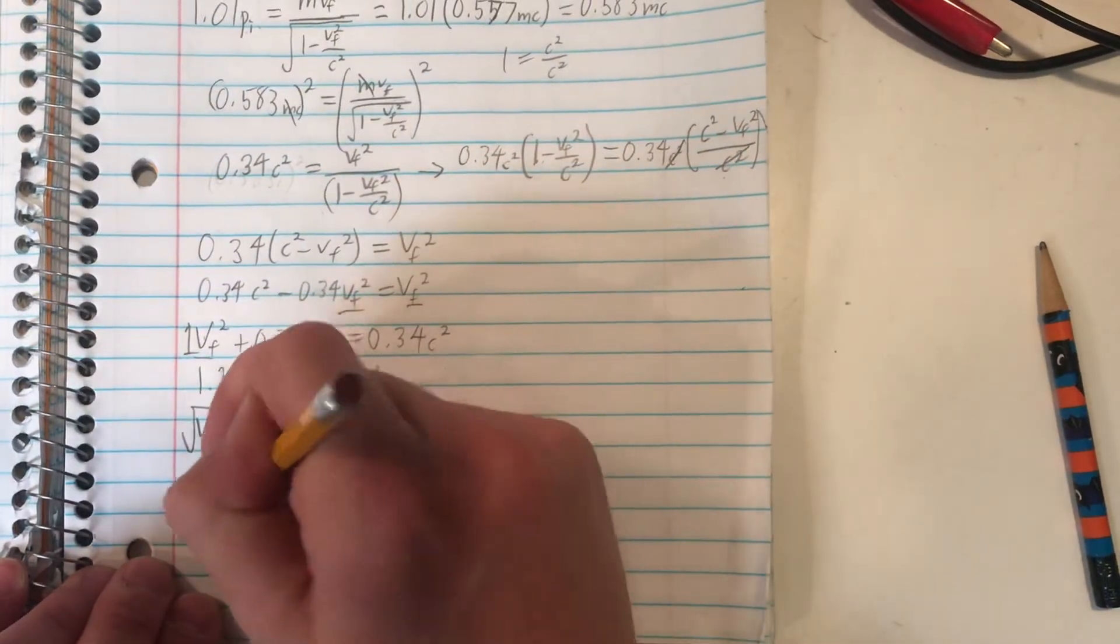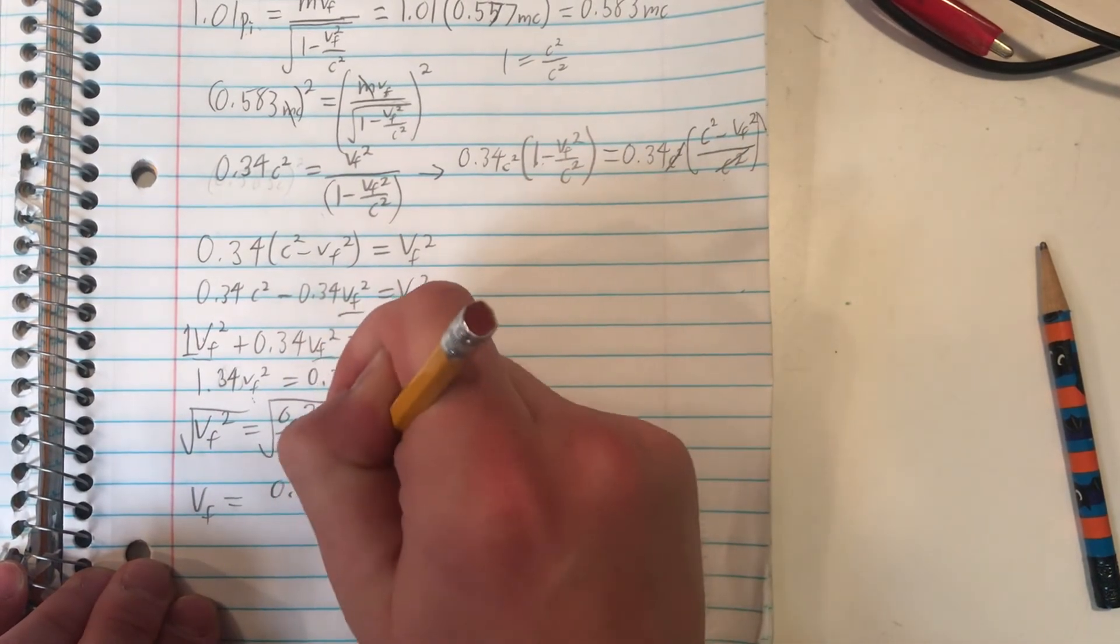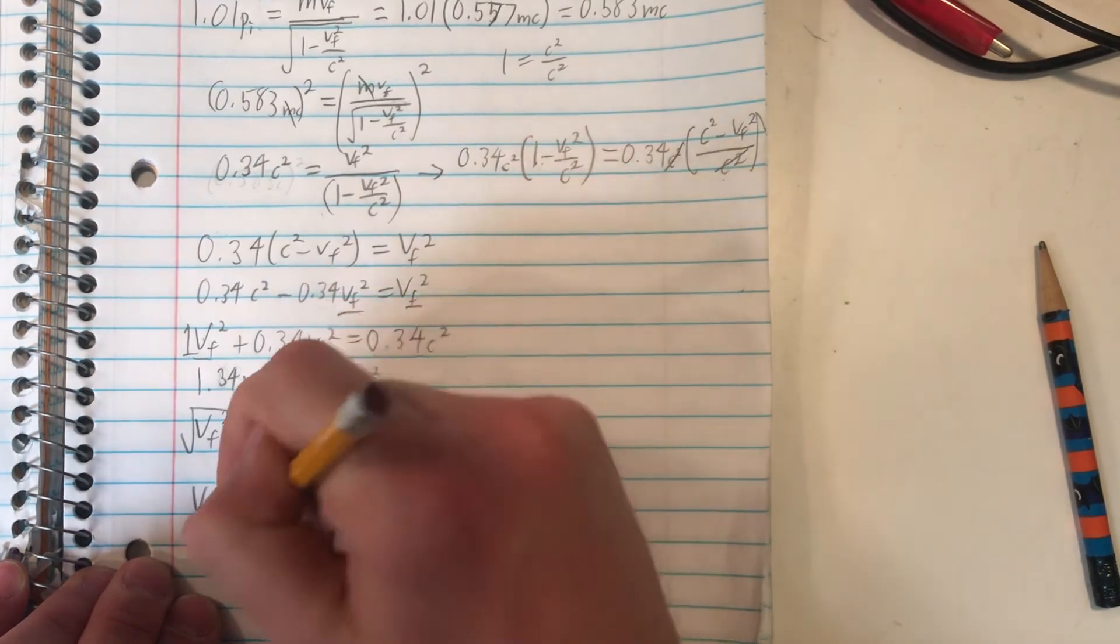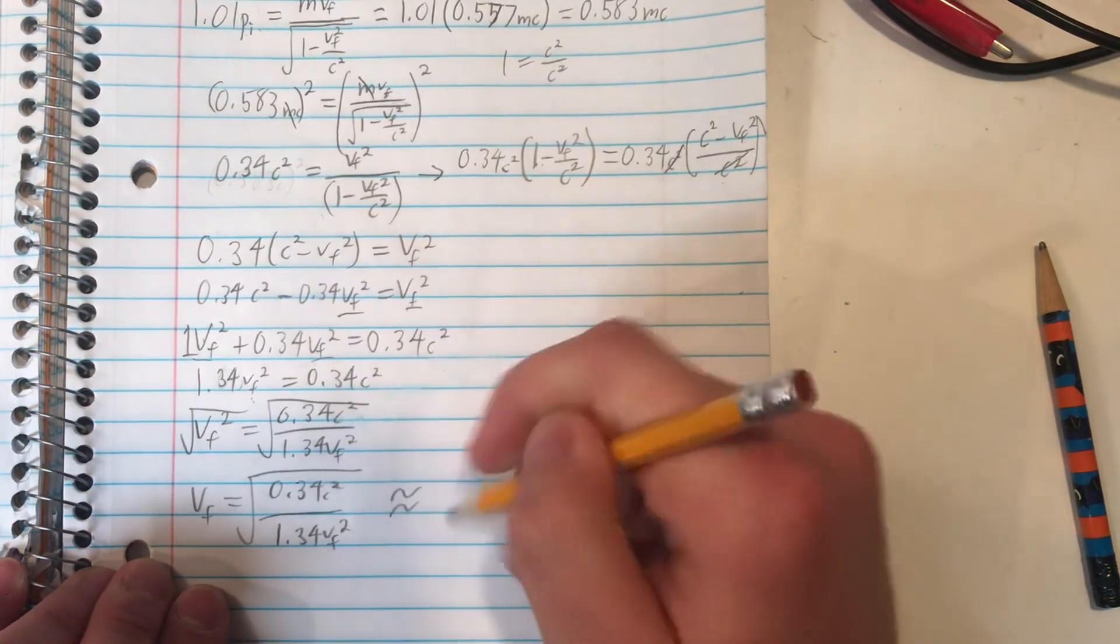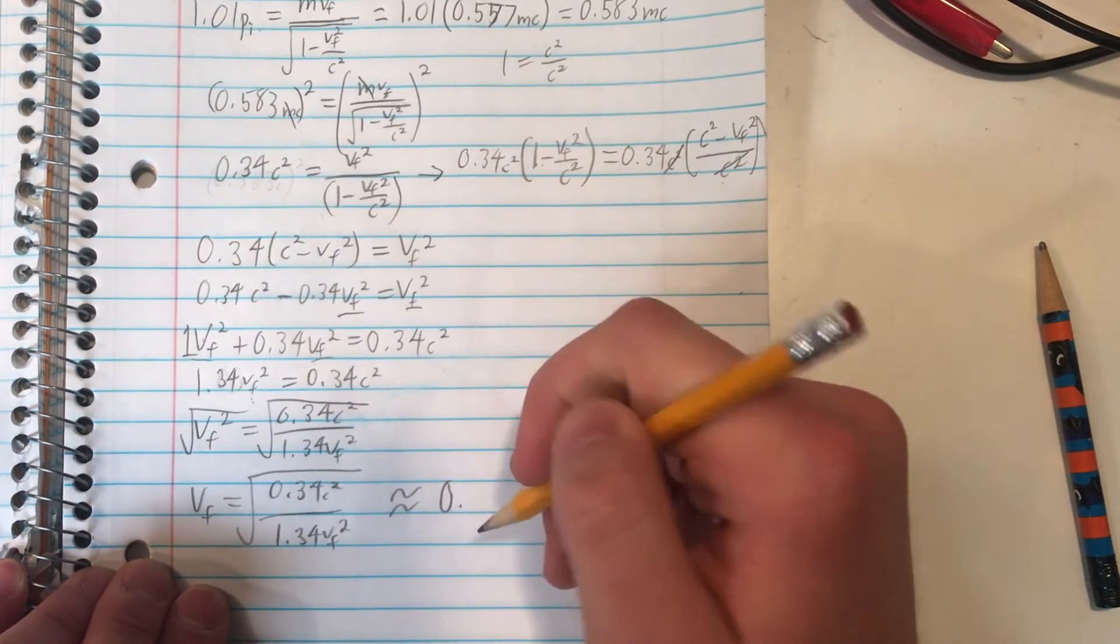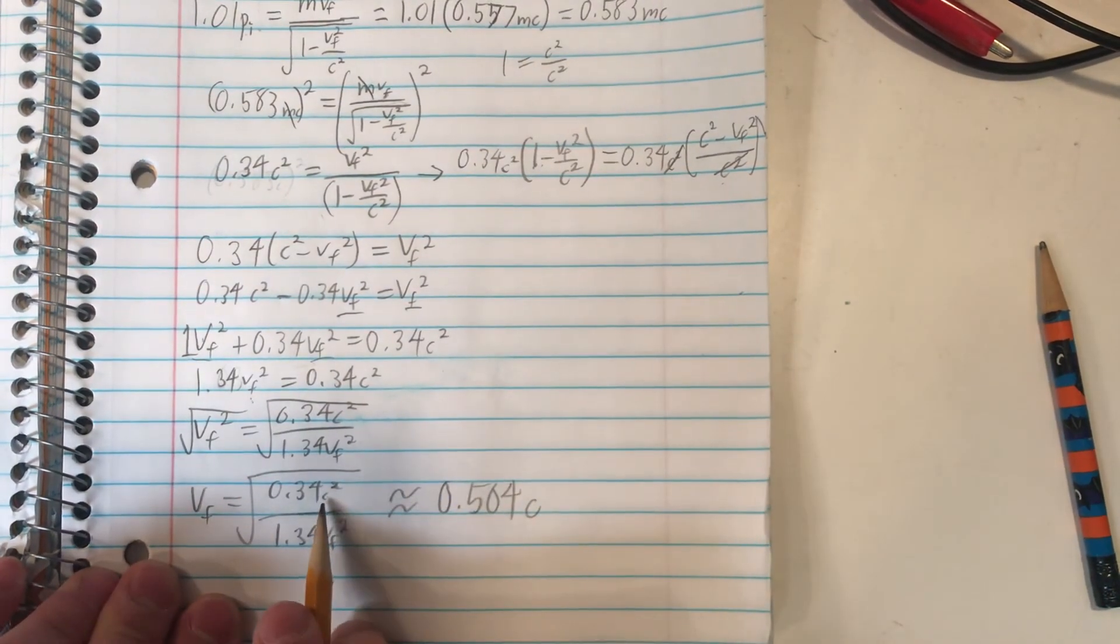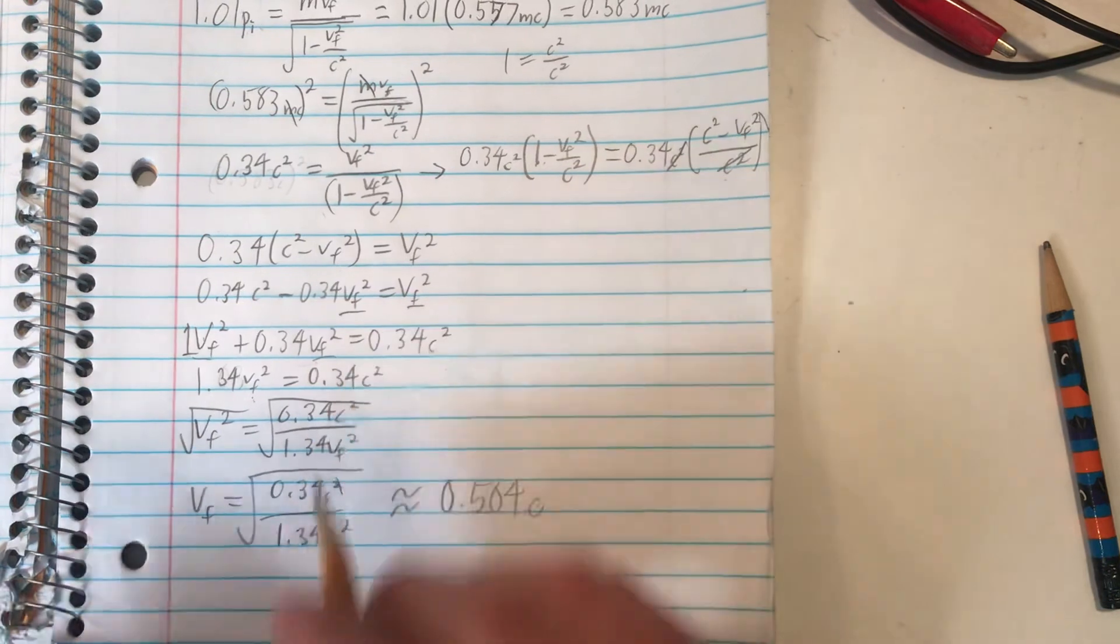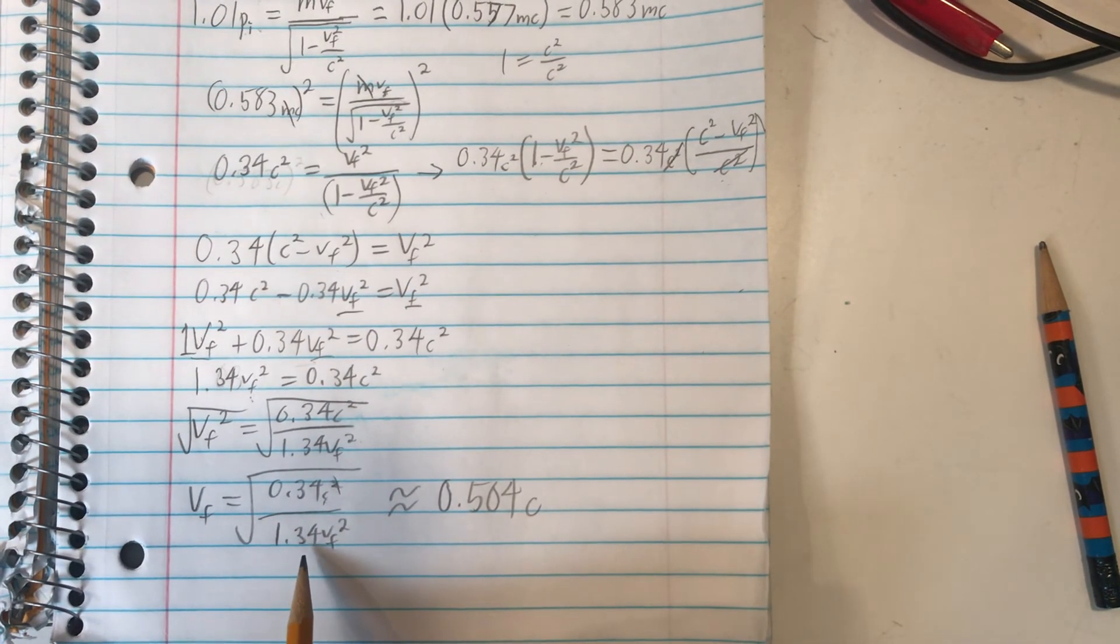So that becomes vf is equal to just 0.34 c squared divided by 1.34, all in the square root. And we find that this approximates to about 0.504 c. So the c here just goes down to a c, because it's squared originally, and the square root cancels that part out. And then I just divided 0.34 by 1.34.